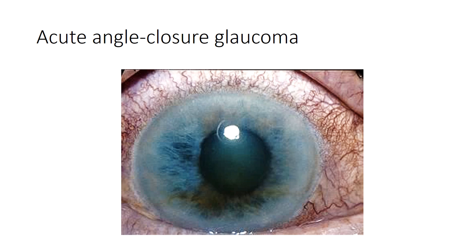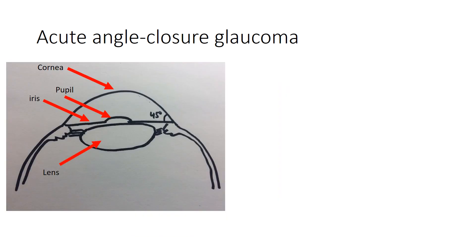Acute angle closure glaucoma is in the differential diagnosis of red eye. In most eyes, the iris meets the cornea so that the angle they make together is wide open at 45 degrees. In this situation, the drainage structures in the angle are easily accessed by the exiting aqueous humor.